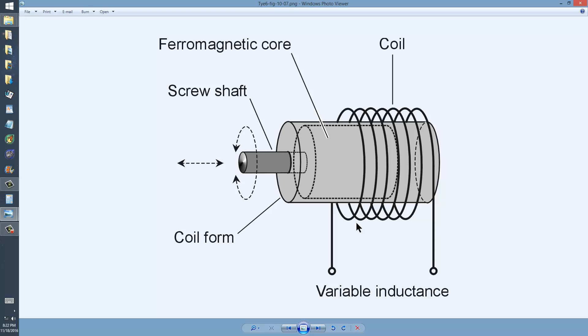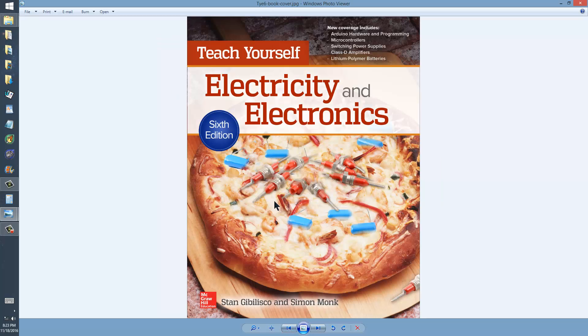When you want a variable inductance whose value you can predict and control with considerable precision, the screw shaft type permeability method is still an excellent way to get it. You'll find it described again in figure 10-7 on page 177 of this book, Teach Yourself Electricity and Electronics 6th edition, but you will also find it in all editions of the book.